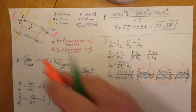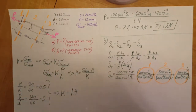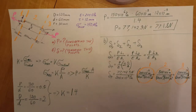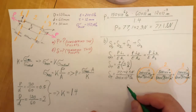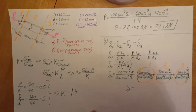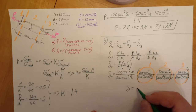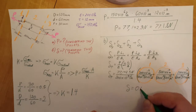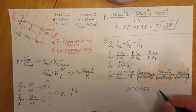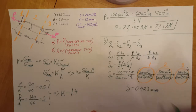With all values plugged in, we calculate the total elongation. The result is 0.429 millimeters.